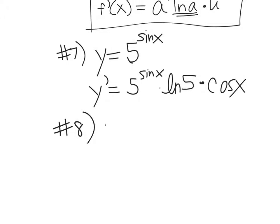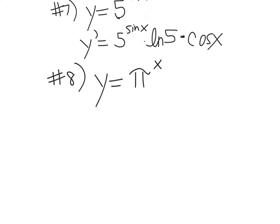Number eight: y equals pi to the x. Pi is a number, it's not base e, it's base a, but it's the same idea. And this one's actually not chain rule because it's just x. So the derivative would be pi to the x — itself — but since it's not base e, we have to multiply by natural log of pi.